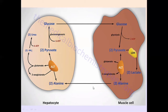Alanine is released into the blood and taken up by the liver. In the liver, there will again be a transamination reaction. This alanine will be converted back into pyruvate. When the amino group is removed from alanine, it becomes pyruvate, because alanine and pyruvate have the same carbon skeleton — the only difference is the amino group.